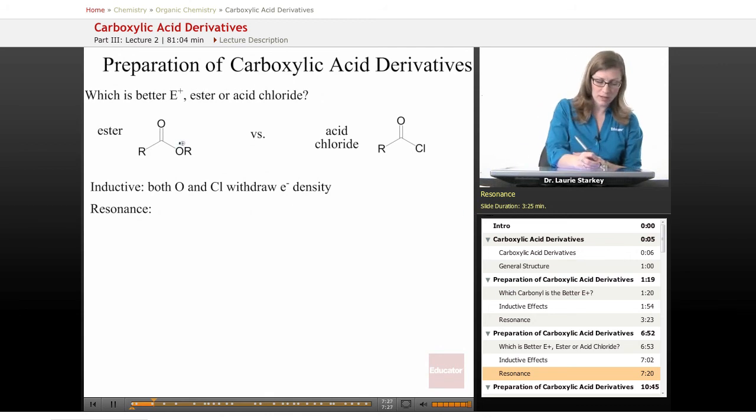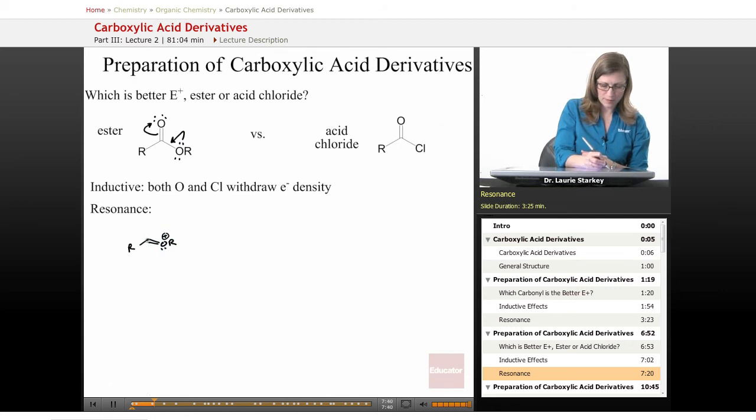So once again, it's always going to be the same picture. We can take one of the lone pairs from our leaving group and share it with the carbonyl to draw a contributing resonance form. It'll always put a positive charge on the leaving group and a negative charge on the carbonyl oxygen.